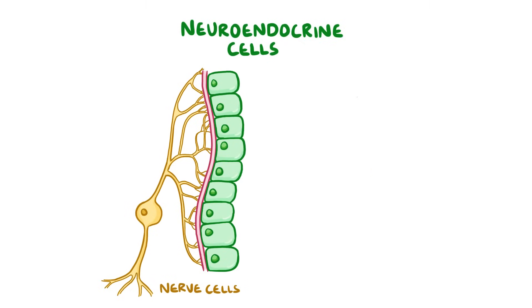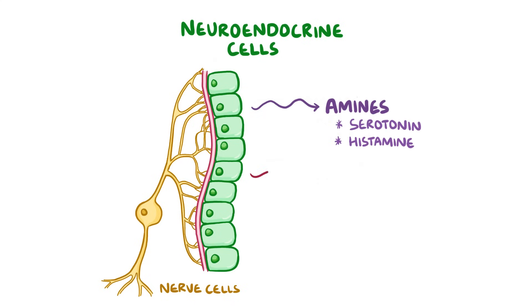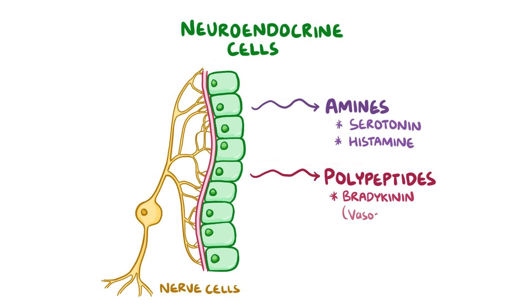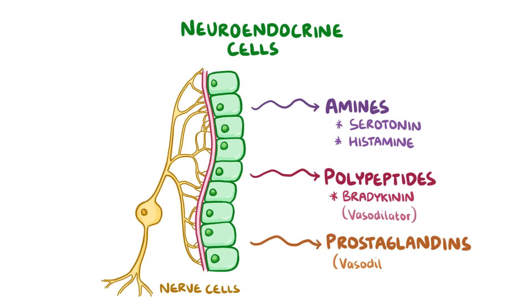Neuroendocrine cells release a variety of hormones, and these include amines, like serotonin and histamine, as well as polypeptides, like bradykinin, which is a vasodilator, and prostaglandins, which are also very powerful vasodilators.